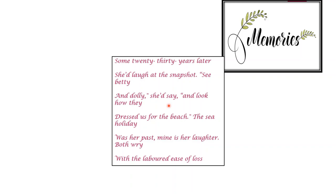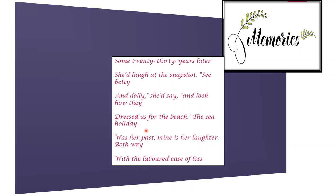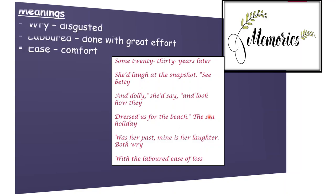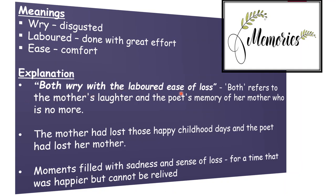It is just like having a fun time watching your childhood photo album and commenting on the way you looked and the kind of dresses you wore. Similarly, the poet's mother, after twenty to thirty years, is recalling the bygone days. The poet remembers how her mother would laugh and feel disappointed at the loss of her childhood days — this is the meaning of 'both thrive with the labored ease of loss.' The word 'both' refers to the mother's laughter and the poet's memory of her mother. 'Labored' means achieved with great effort, while 'ease' means achieved with great comfort — referring to the loss of the mother's happy childhood days and the poet losing her own mother.